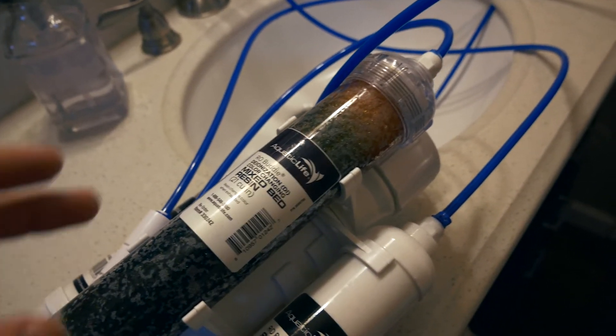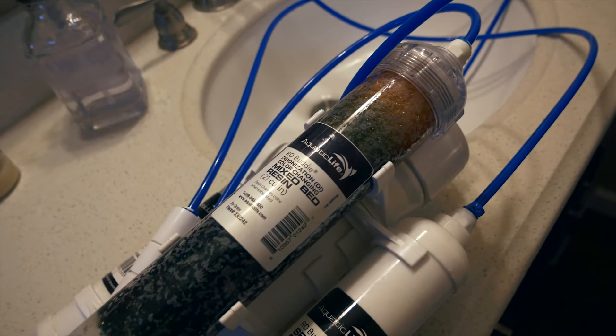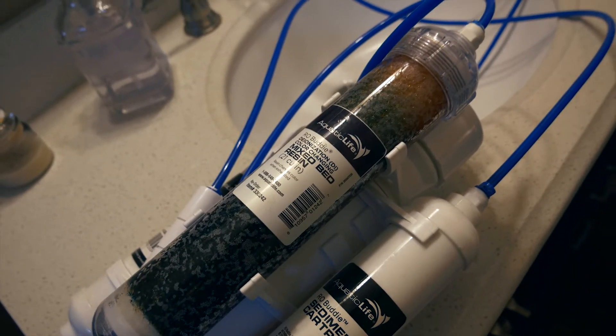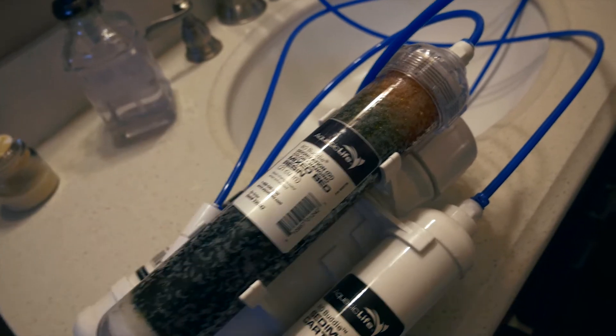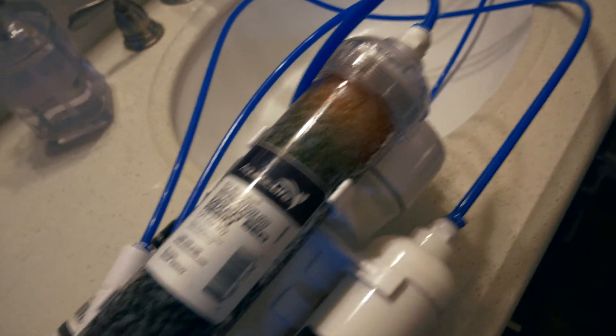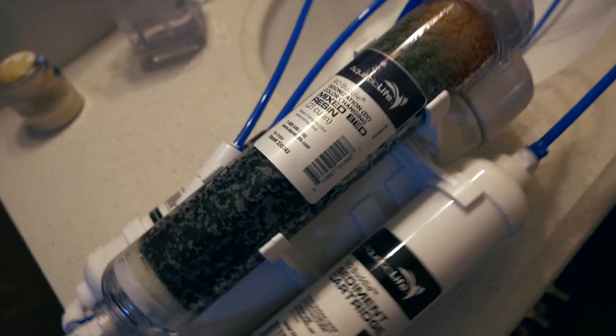Also pick up the mixed resin bed for the deionization. If your water is dirty, you definitely want to get one of these. It really depends how clean your water is. But if you can get your PPM down to zero or one, that's pretty good. And that's what this does for me. As you can see, it's getting kind of brown here as well. That means it's starting to go, but there's a lot of life left still.